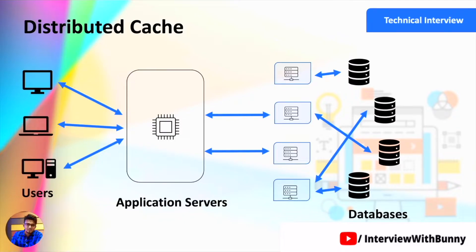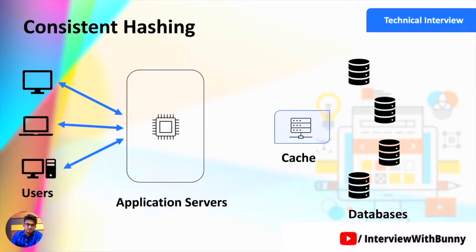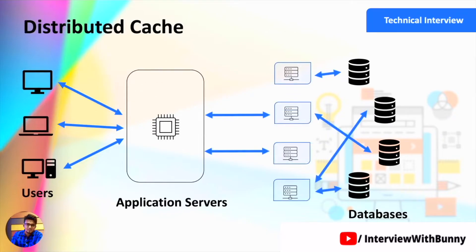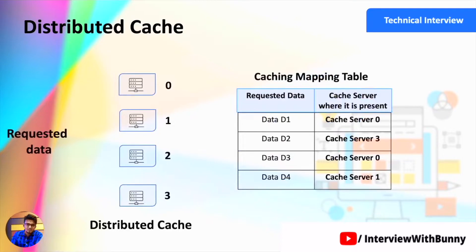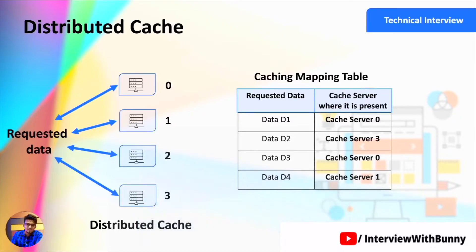In that video we also discussed the different types of caching systems that we can incorporate in a large-scale distributed system to increase performance. Today in this video we will discuss in detail how we should store data in a distributed caching system so that it will be easy to fetch data in the future. The general mechanism of storing data in a distributed system is by using a virtual hash table, where each data item with its request ID is mapped to the corresponding data server.